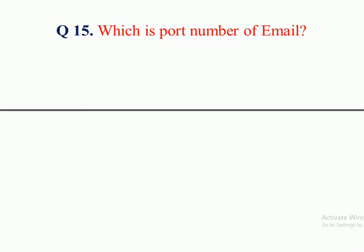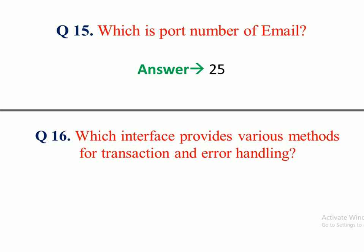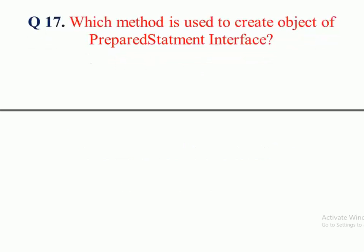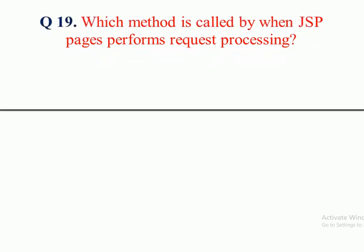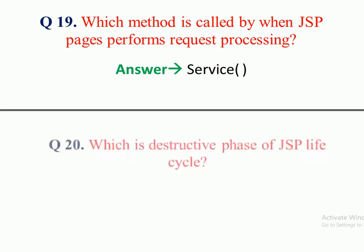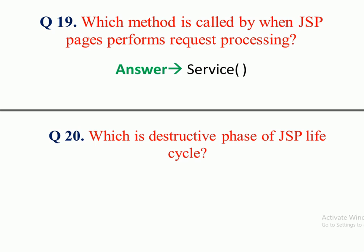Question 15: Which is the port number for email? Answer: 25. Question 16: Which interface provides various methods for transaction and error handling? Answer: ResultSet interface. Question 17: Which method is used to create an object of PreparedStatement interface? Answer: prepareStatement method. Question 18: Which method returns the number of rows affected? Answer: executeUpdate method. Question 19: Which method is called when a JSP page performs request processing? Answer: service method. Question 20: Which is the destructive phase of JSP life cycle? Answer: Cleanup phase.